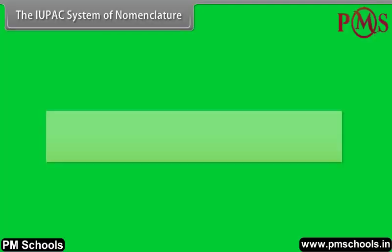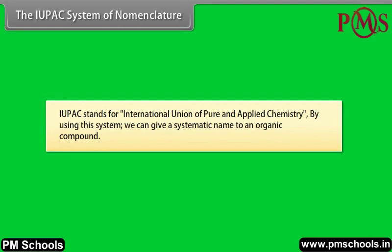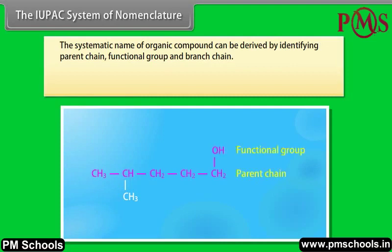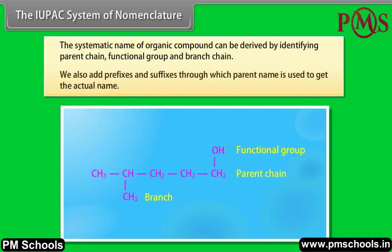The IUPAC system of nomenclature. IUPAC stands for International Union of Pure and Applied Chemistry. By using this system, we can give a systematic name to an organic compound. The systematic name can be derived by identifying the parent chain, functional group, and branch chain. We also add prefixes and suffixes through which the parent name is used to get the actual name.